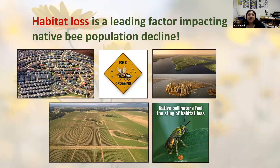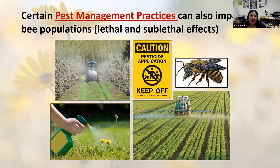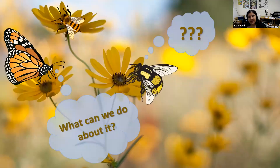Habitat loss is considered one of the leading factors impacting overall biodiversity and especially native bee population decline. This is unsurprising if you live in any kind of changing landscape — you're probably seeing a transformation of natural areas into more urbanized and suburbanized landscapes. Certain pest management practices and pesticide impacts can also affect bee populations, either through lethal effects that outright kill bees or sublethal effects that impact their health. What can we, as home gardeners, do about this, and what impacts can we feasibly have on these beneficial organisms?